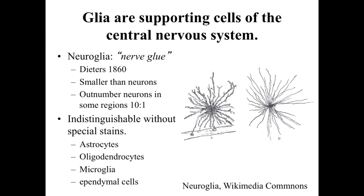In most cases, glial cells are going to be indistinguishable without special stains. We may be able to identify them in general based on their location, but we can't define them specifically with 100% accuracy without some type of special stain. Within the central nervous system there are four glial cell types: the astrocytes, the oligodendrocytes, the microglia, and the ependymal cells.